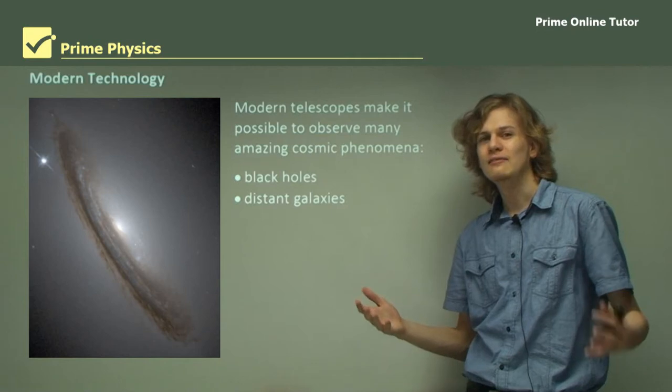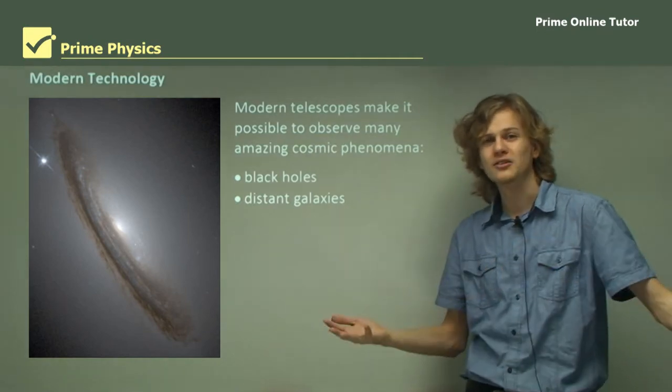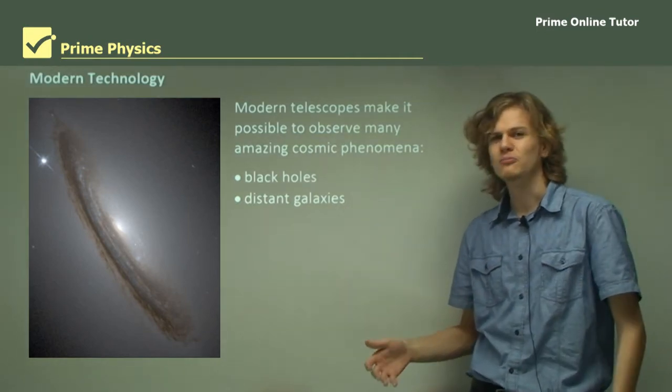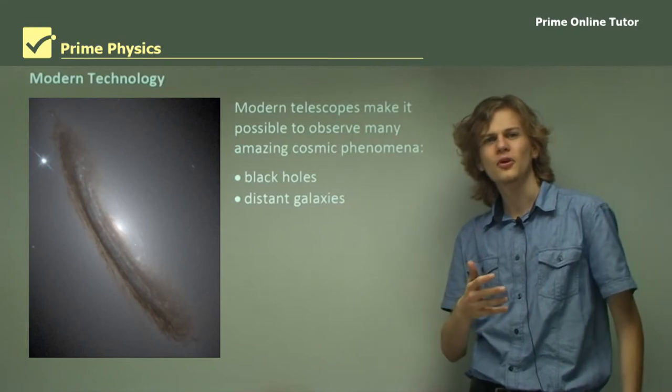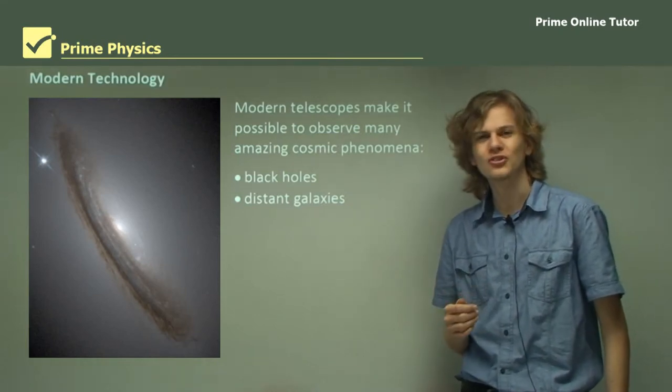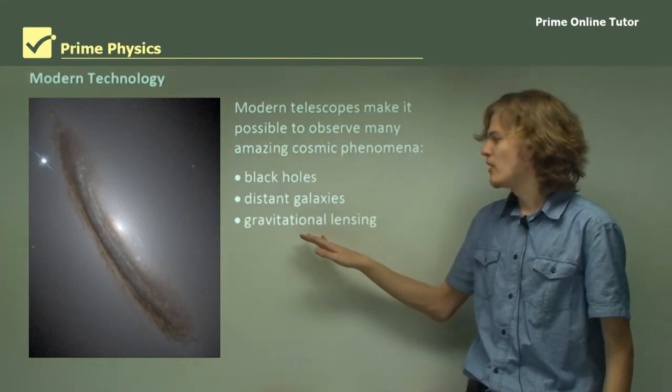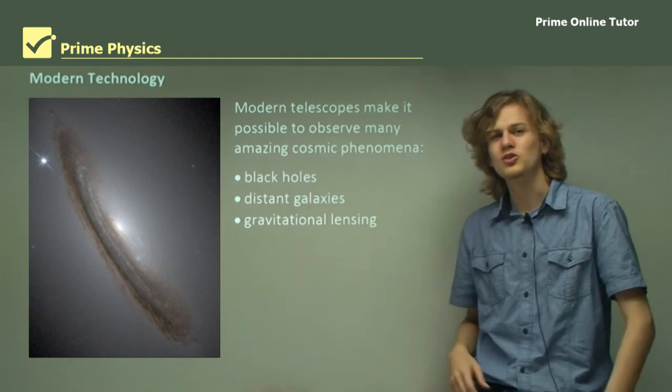For a long time we didn't even know that we were part of a galaxy. We didn't know what a galaxy was. But now we can observe galaxies on the other side of the observable universe. We can observe gravitational lensing around mysterious objects like dark matter.